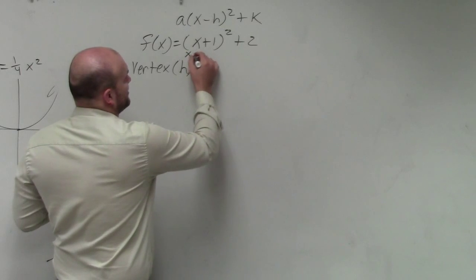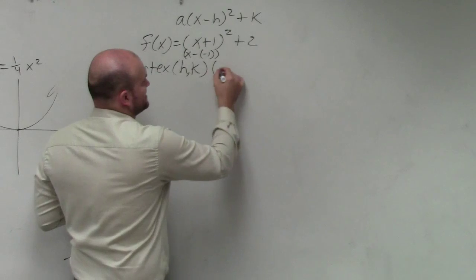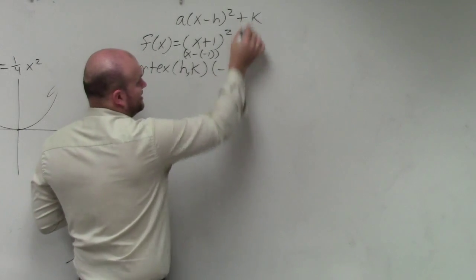So this can be written as x minus negative 1. Therefore, my h in this case is negative 1, and my k is 2.